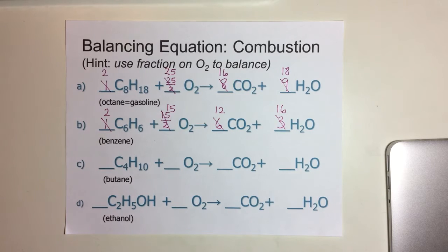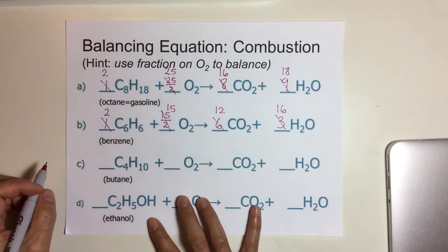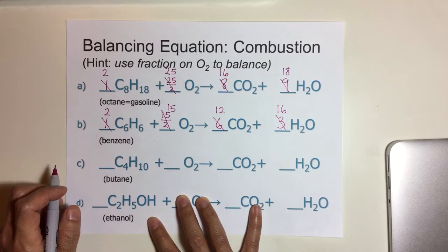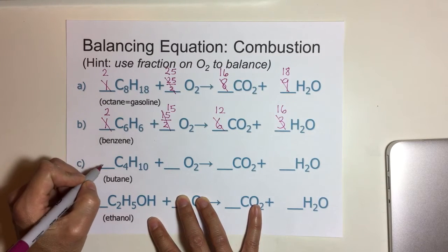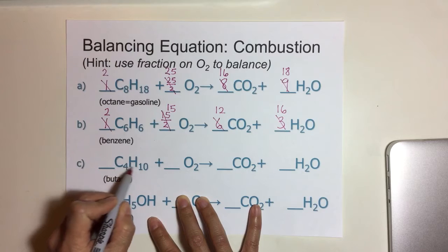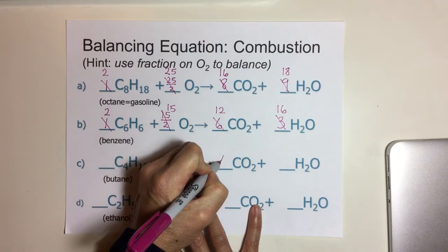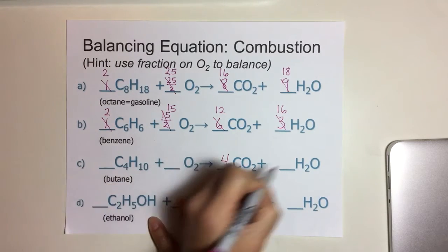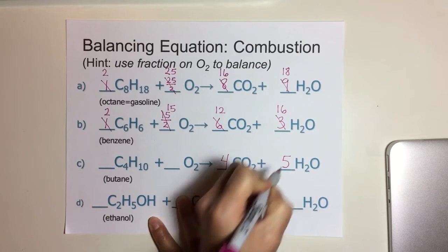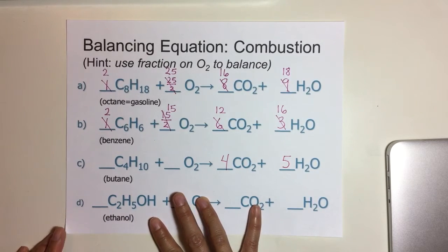Let me have you pause this video right now and go ahead and balance C and D yourself. Hopefully you've been able to balance this equation correctly, and so let's start. Again we're going to start with carbon. Carbon is 4. Hydrogen is 10, so 5 on this side of the reaction on the product side.